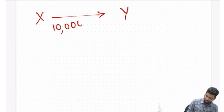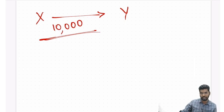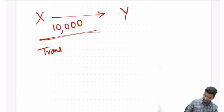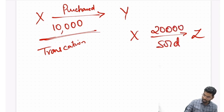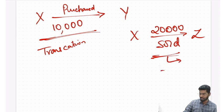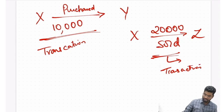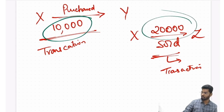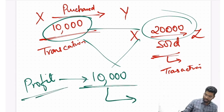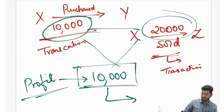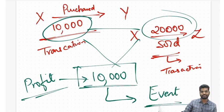For example: X purchases goods from Y for 10,000 — this is a business activity, so it's a transaction. X then sells those goods to Z for 20,000 — again a transaction. X purchased for 10 and sold for 20, so he made a profit of 10,000. This profit is a consequence of two transactions.